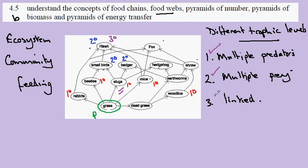And we see that there are linked food chains — some of the food chains have two or just three links in them.